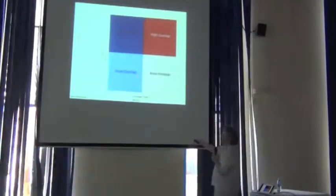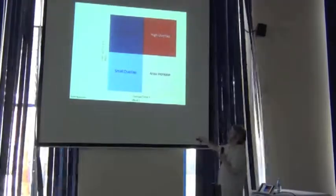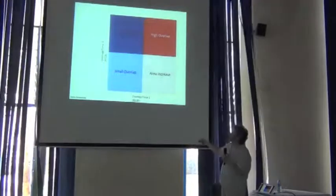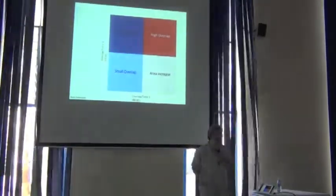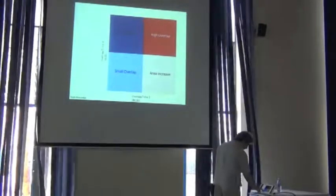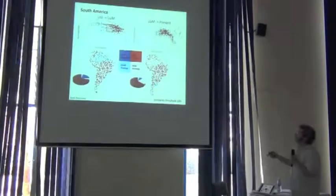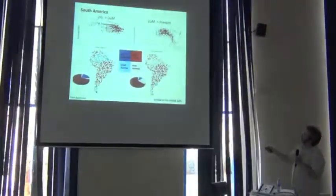This quadrant, these areas are small, sites showing essentially very dynamic change, small overlap between the two time periods. And these are areas that are quite stable. Let's look at South America. We see these stable areas, especially here in the middle part of the continent.